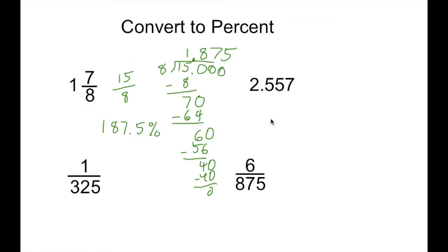Here's an example where it is already a decimal. So we can just move it over two places to the right, and it's going to be 255.7%.